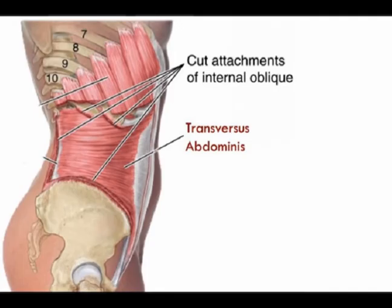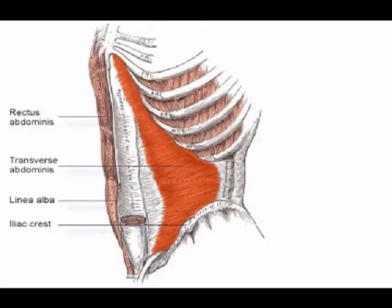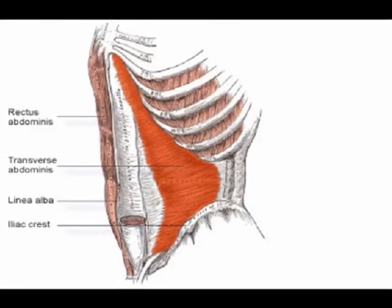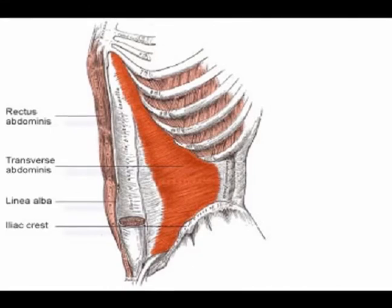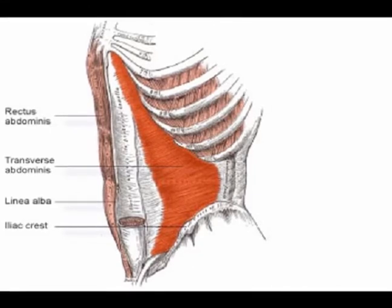So, the TAs or TVAs — the transverse abdominus muscles — are extremely important muscles. Again, they are the deepest of the abdominal muscles.